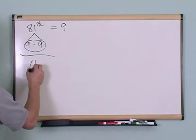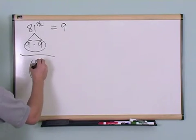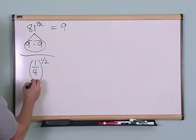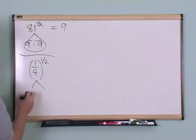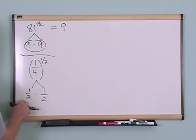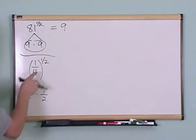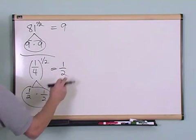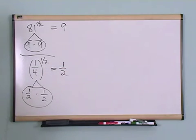If you have one-fourth raised to the one-half power, again, this is a square root. So one-fourth is one-half times one-half. One-half times one-half gives me one-fourth. It's a square root, even though I've written it this way. I'm looking for pairs. So I pull the one-half out. This just equals one-half.